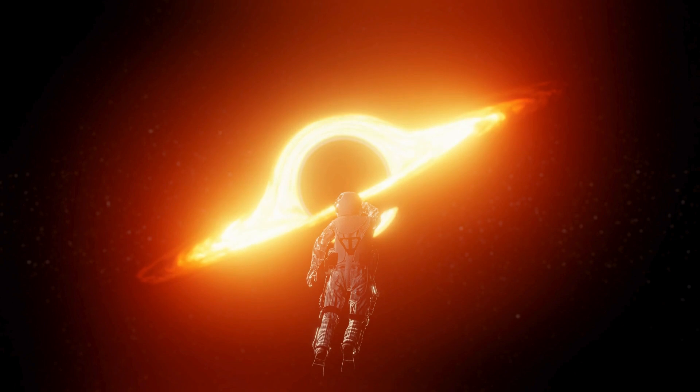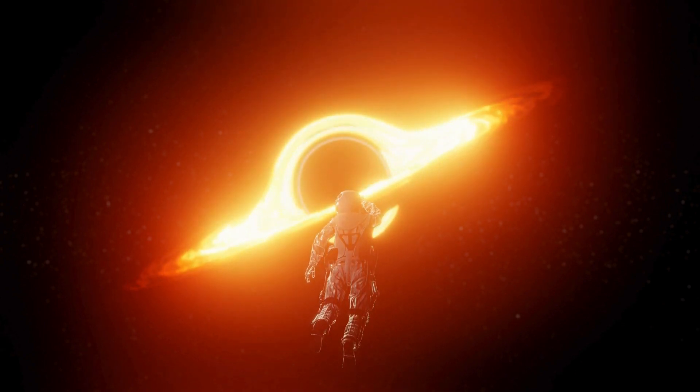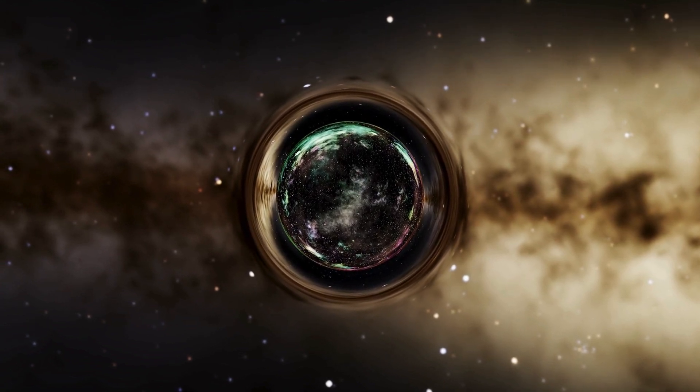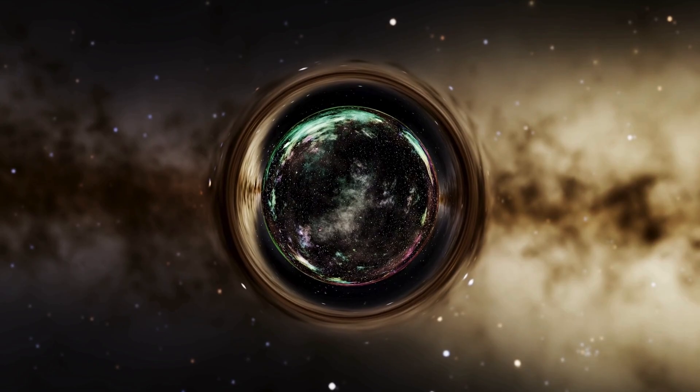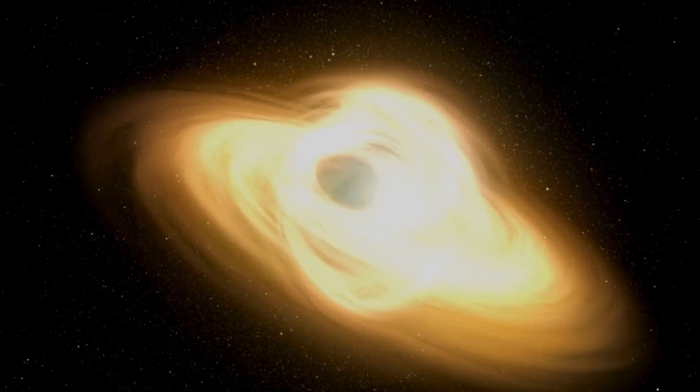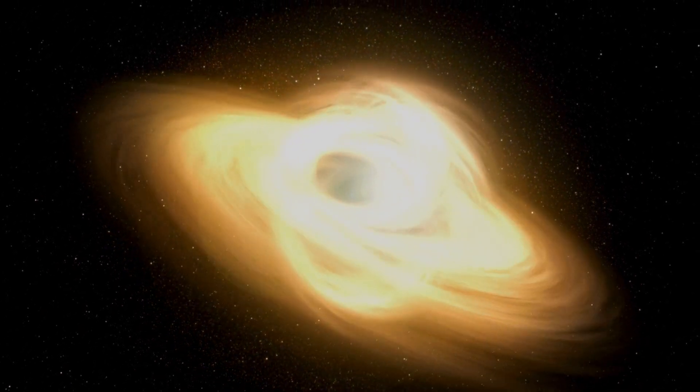But where do black holes come from? Picture this: stars, once magnificent and blazing, meet their ultimate demise in a spectacular explosion called a supernova. From the remnants of these fallen giants, black holes emerge. Most black holes are born from massive stars that have reached their celestial retirement party in a supernova blast.